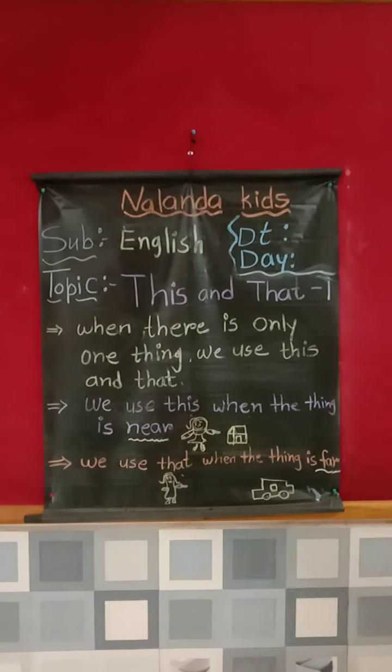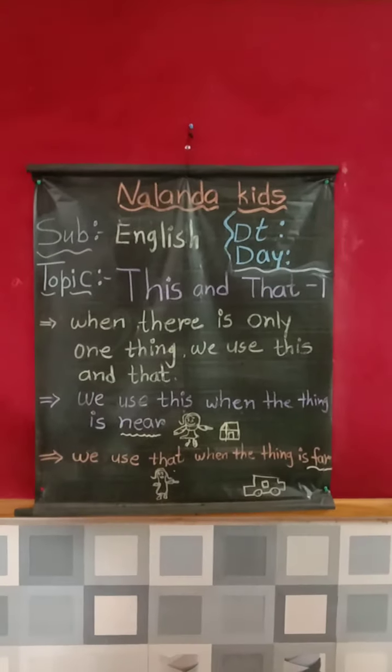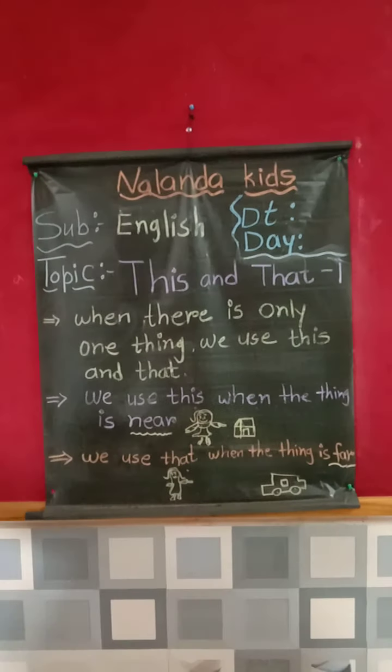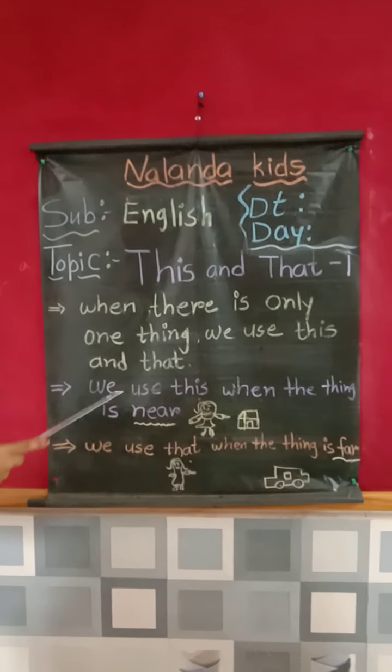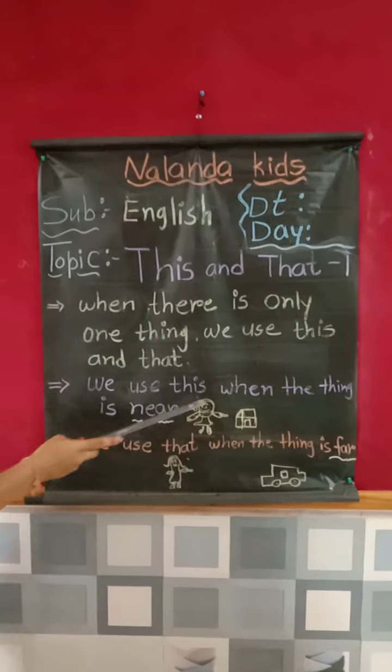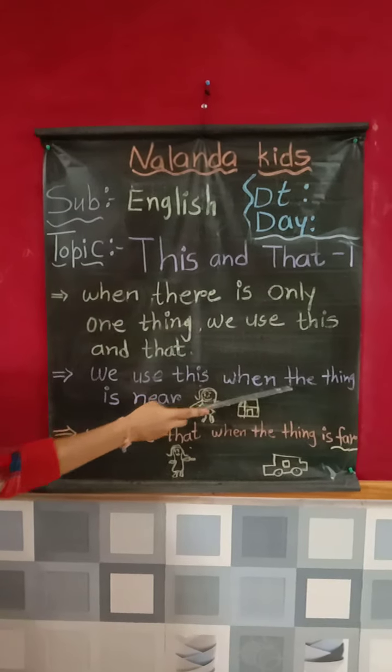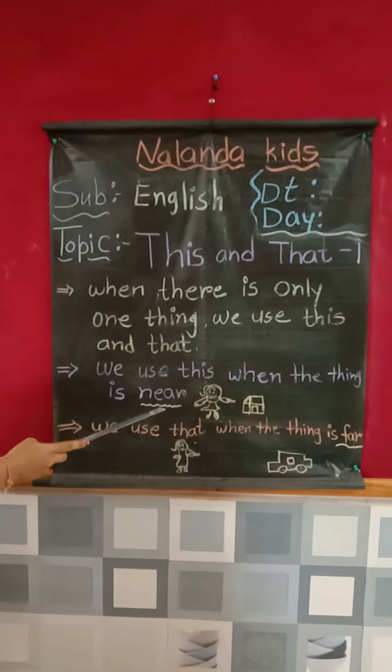But how can we know where to use 'this' or 'that'? We use 'this' when the thing is near.